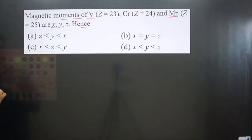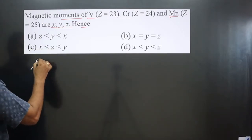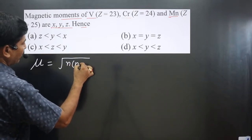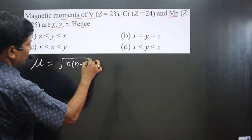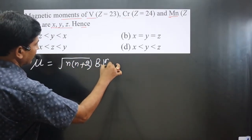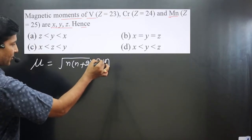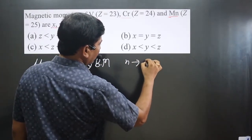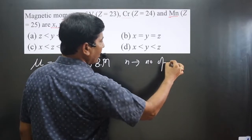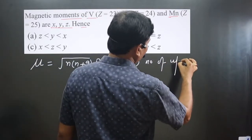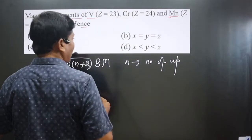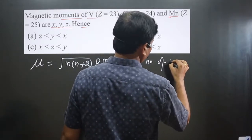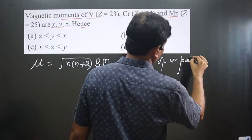The formula to calculate magnetic moments is: μ = √(n(n+2)), where the unit is Bohr magneton. Here, n is the number of unpaired electrons. This is the formula we use, where n represents the number of unpaired electrons.